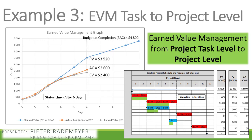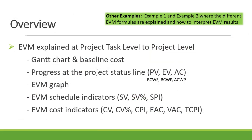In this video, I'll be using an example to explain earned value management at project task level, and I'll be rolling it up to project level. As part of the example, we will be preparing a Gantt chart and calculate the baseline cost. Then we'll be calculating the progress up to the status line, and we'll be calculating the planned value, earned value, and actual cost. We'll also be preparing an earned value graph and calculating the schedule indicators.